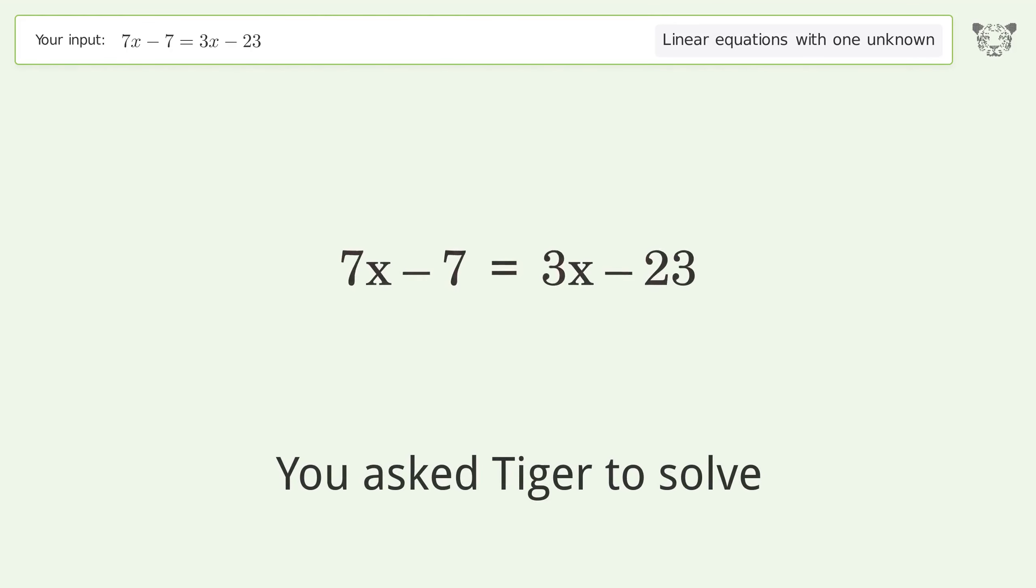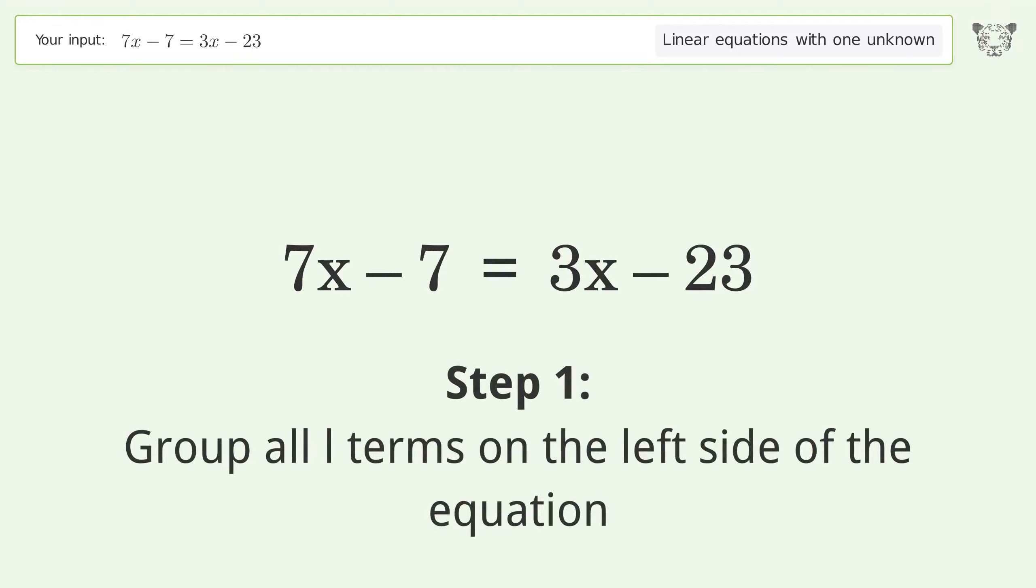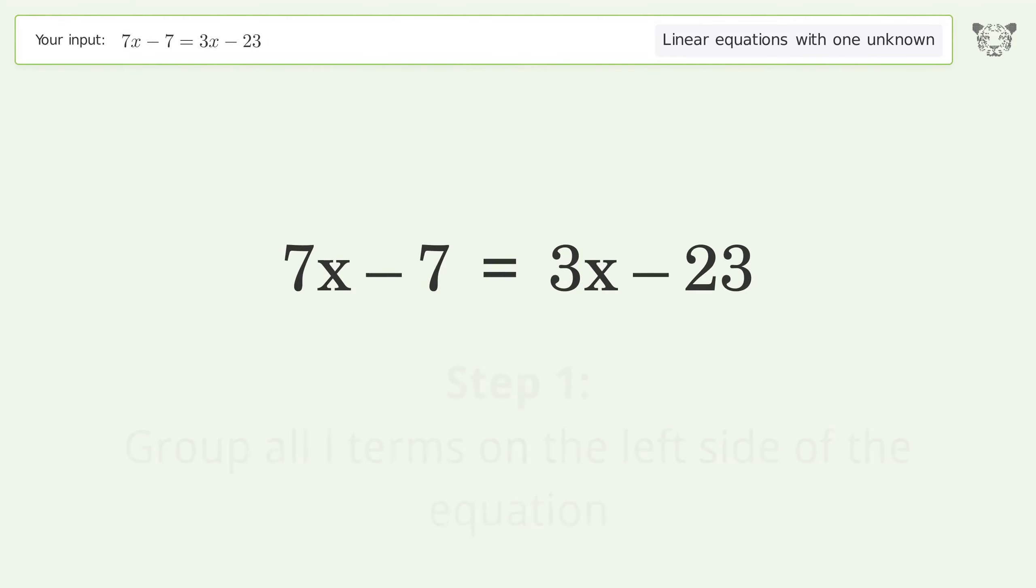You asked Tiger to solve this linear equation with one unknown. The final result is x equals negative 4. Let's solve it step by step. Group all x terms on the left side of the equation. Subtract 3x from both sides.